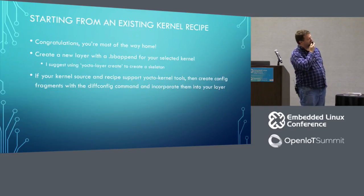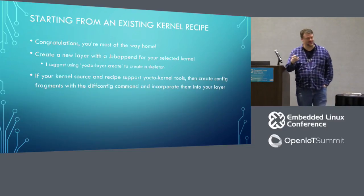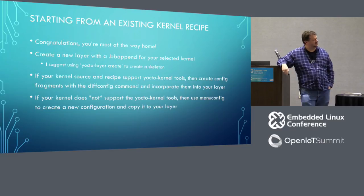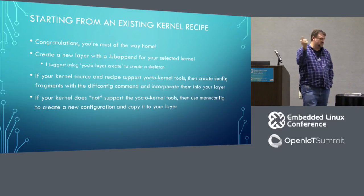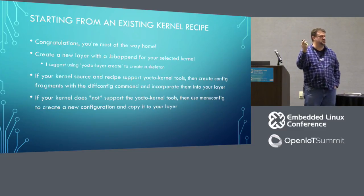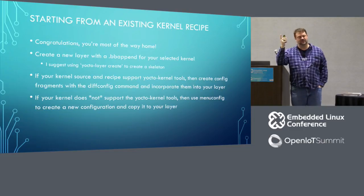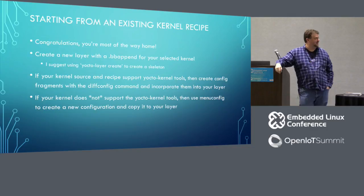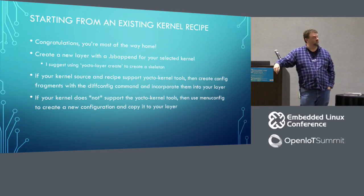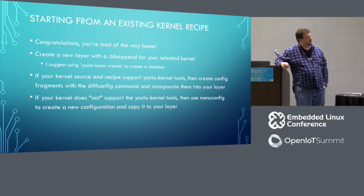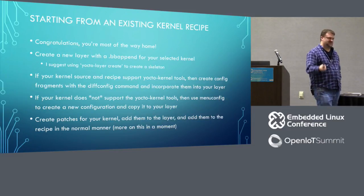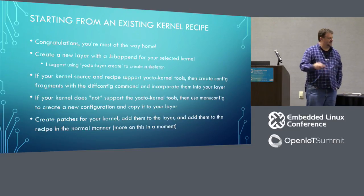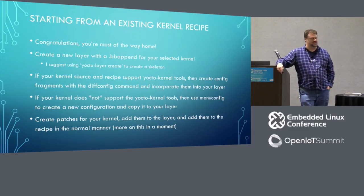If your kernel doesn't support the Yocto kernel tools, you can still use menuconfig, but your config file sits in the tree. At that point you'll want to copy it out — referring back to that recipe example, that's the defconfig. Copy that back to your layer, check it in, and away you go. For your actual patches, as opposed to the config portion, you have two major directions: add them as patches or add them into your version control. Add them as patches or add them into your version control system.